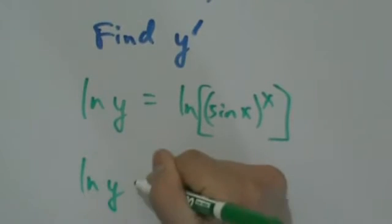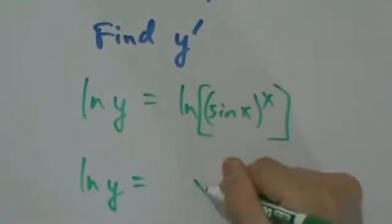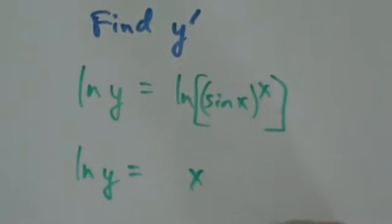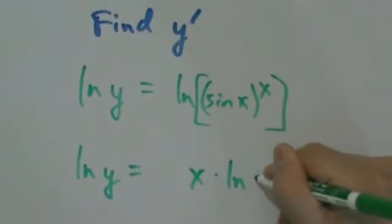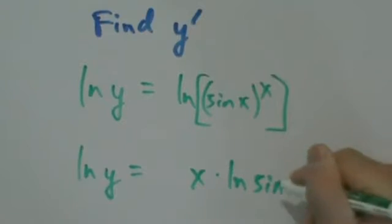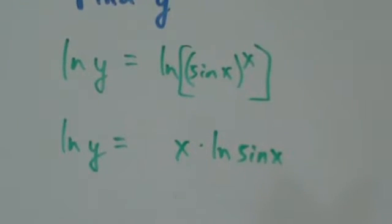I'm gonna leave a little bit of room here - x times natural log of sine of x. We don't really need any parentheses at all anymore because this exponent is out now, so that's good.